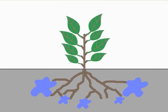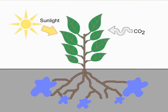For most plants, photosynthesis occurs in the leaves. During the daytime, leaves absorb carbon dioxide and sunlight.